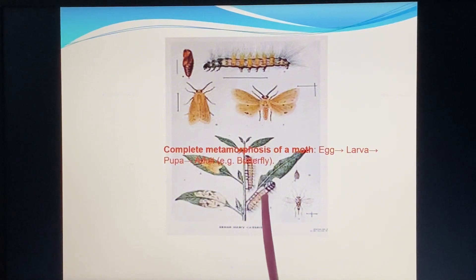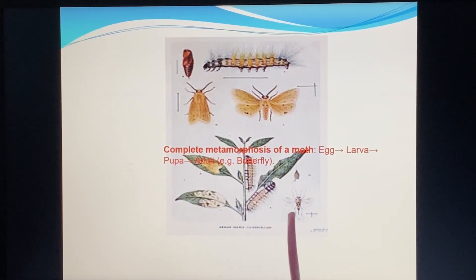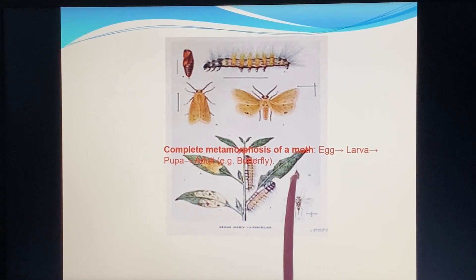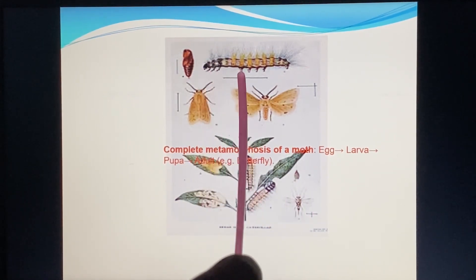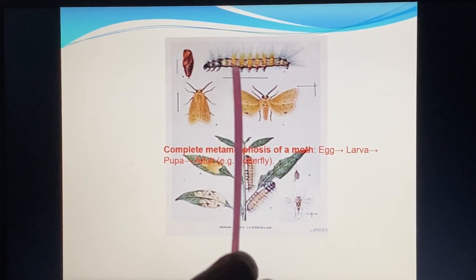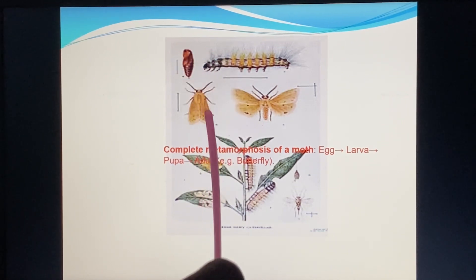Egg, larva, pupa — here there is a pupa, and the pupa becomes adult. So the stages are larva, pupa, and adult.